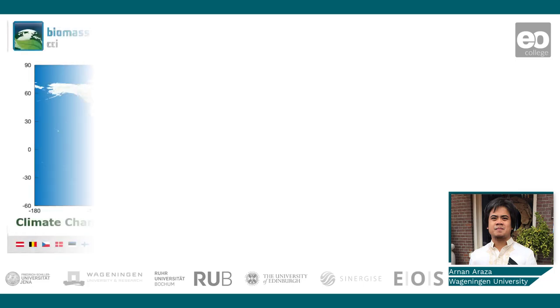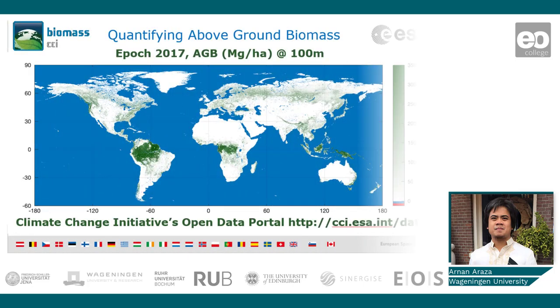The map shown earlier is a direct estimation using synthetic aperture radar, or SAR, as the main input to derive the growing stock of forests, then converted to AGB.